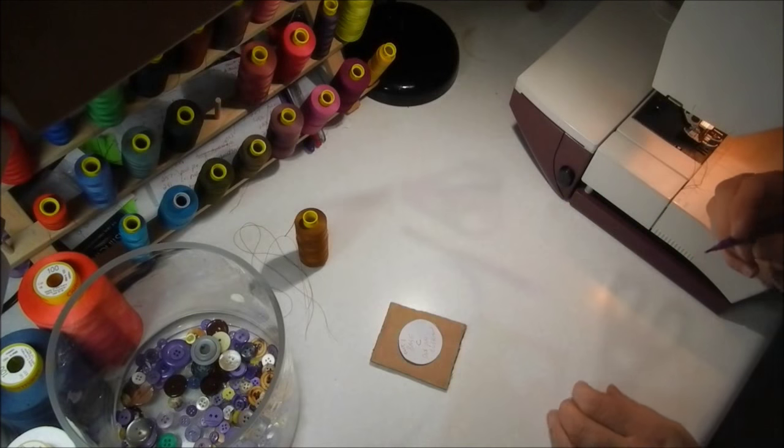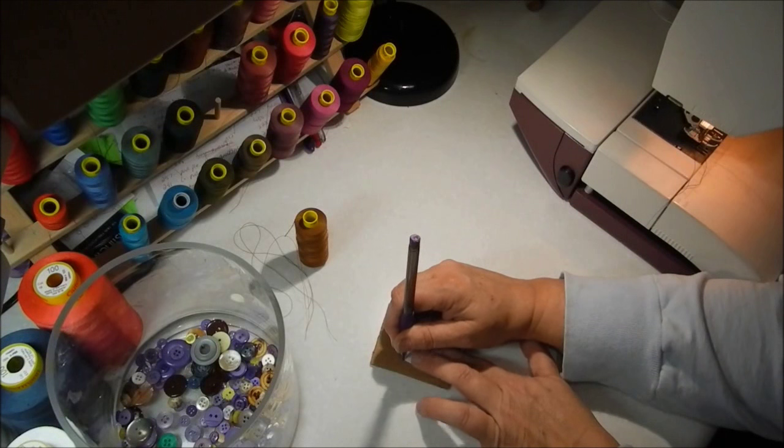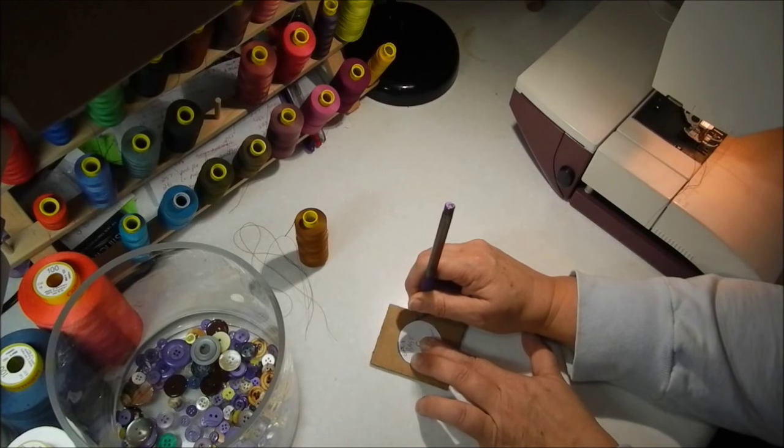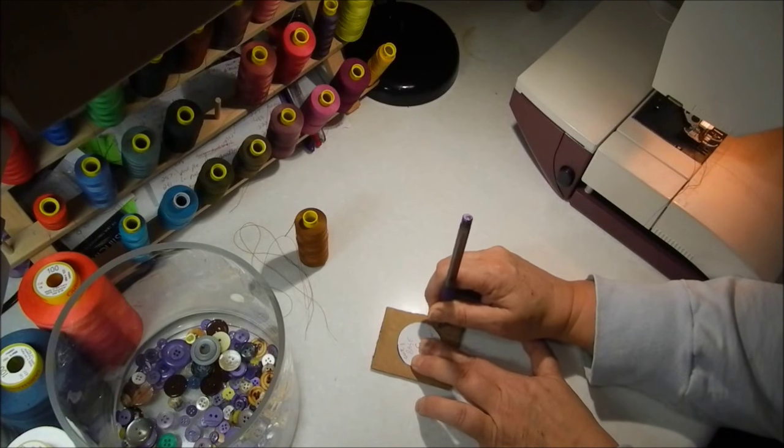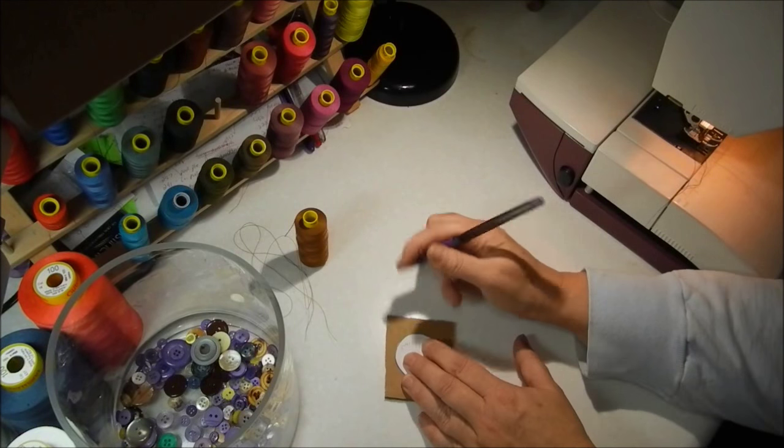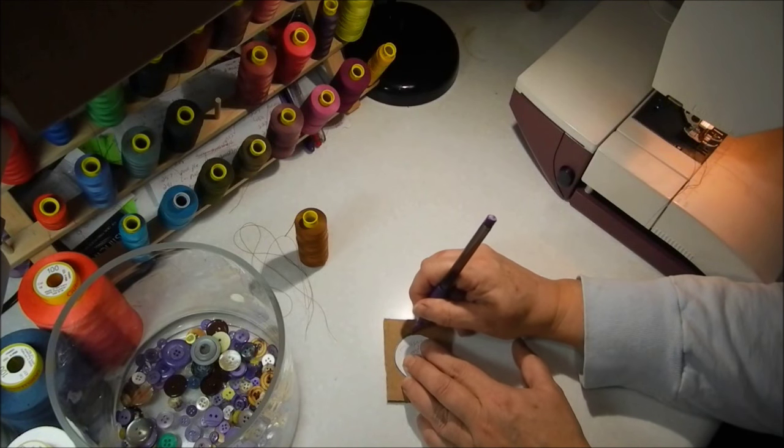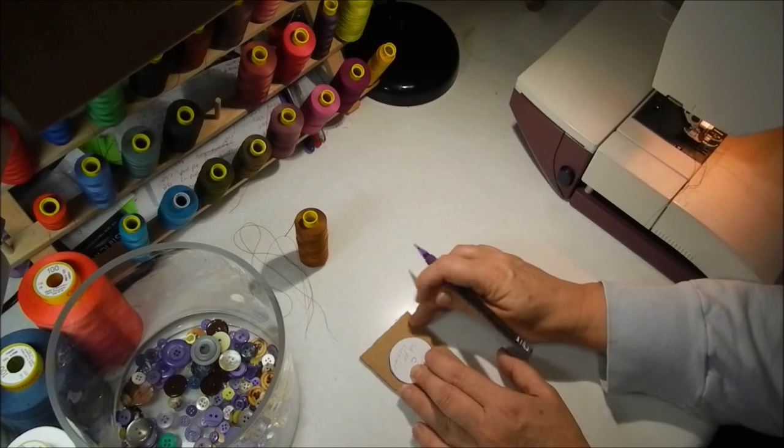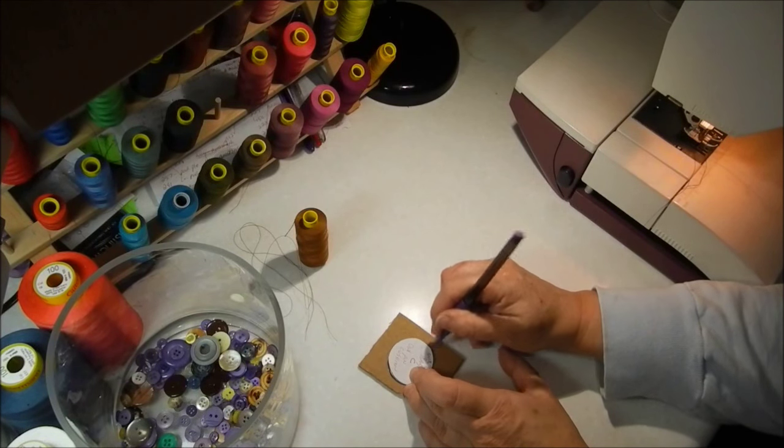I'm going to start by cutting out the base. I'm just going to trace around my little circle. It's about a two inch circle, and you could use a washer, just a heavy washer. It will give it a little more weight on the base with the washer.